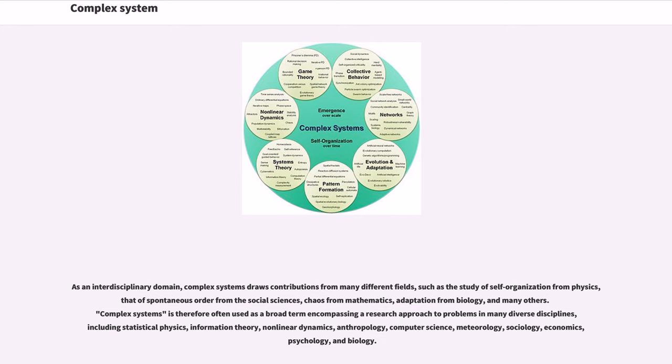which attempts to explain systems in terms of their constituent parts and the individual interactions between them. As an interdisciplinary domain, complex systems draws contributions from many different fields, such as the study of self-organization from physics, that of spontaneous order from the social sciences, chaos from mathematics, adaptation from biology, and many others.